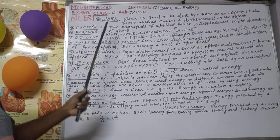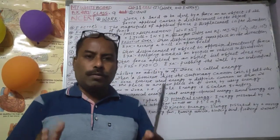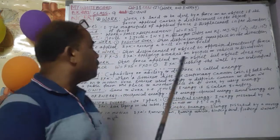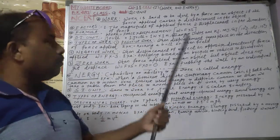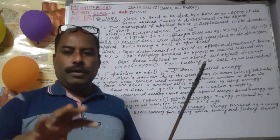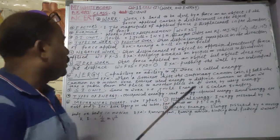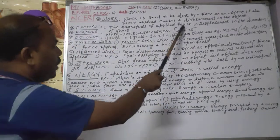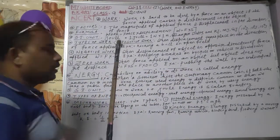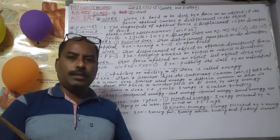What are the factors involved in doing work? There are two factors. First factor is the magnitude of the applied force. And the second factor is the displacement caused by the body — the displacement in the direction of the force. These are the two factors on which work depends.